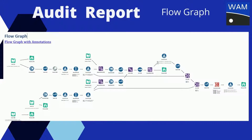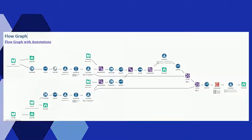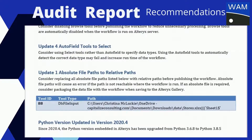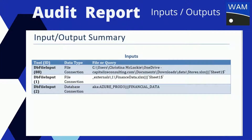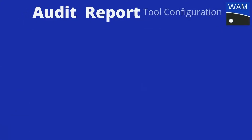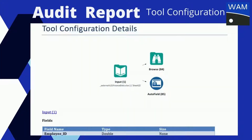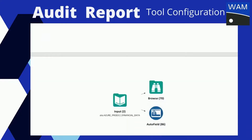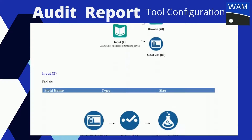The Audit Report contains several components, including a visual recreation of your workflow with annotations and a pixel-perfect PDF or SVG version, recommendations for improving your workflow for the new or the seasoned Alteryx user, an input-output summary that provides detailed information about the location of your data sources, and a tool configuration detail section, which will show tool-by-tool all the configurations occurring on each of the tools you're using in your Alteryx workflow.